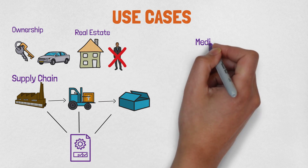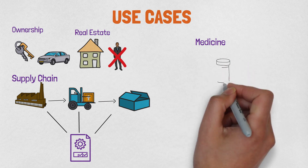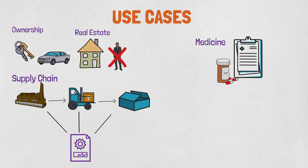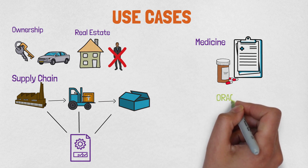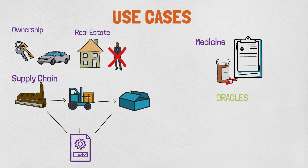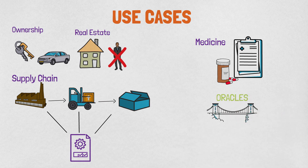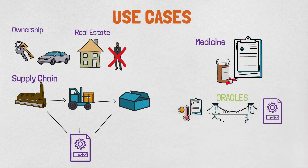Smart contracts can be used for medical purposes as well, for example to automatically issue prescriptions based on a medical record. One thing you may be wondering is how a smart contract tracks and records real-world data. For this, there are oracles, which are basically bridges between the blockchain and the real world. Oracles send real-world data to the smart contract that records them in the blockchain.